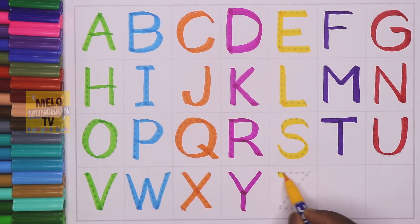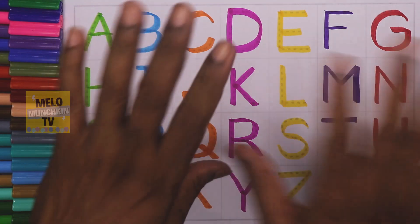Z. Z for zipper. So hence we have completed our alphabets from A to Z in capital letters or you can say in uppercase. So see you in my next video kids. Till then take care and bye bye.